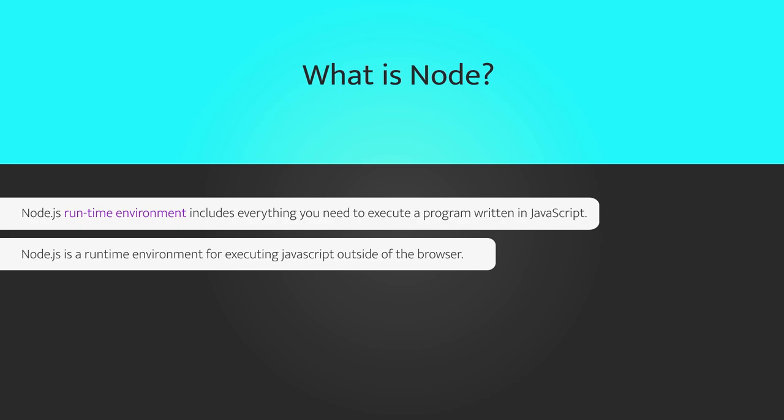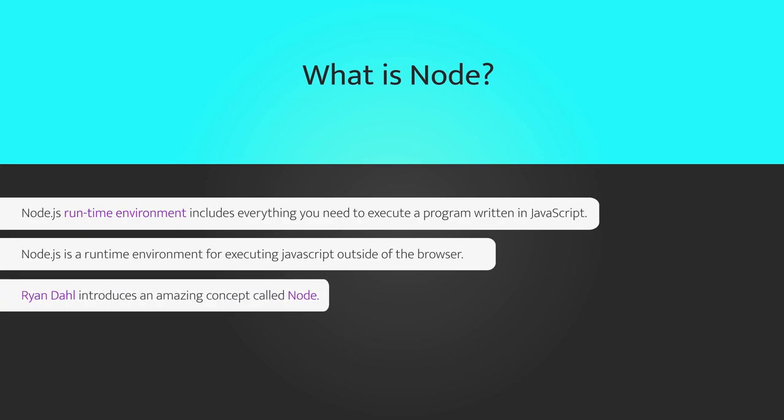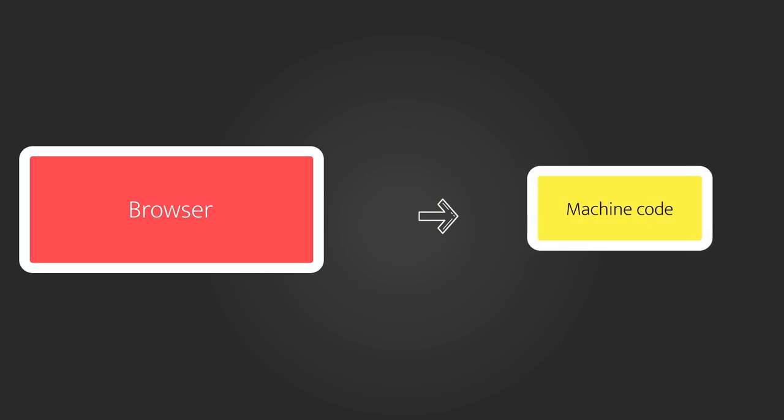Until 2009, JavaScript could only be executed in the browser. The inventor of Node, Ryan Dahl, introduced a new concept: executing JavaScript programs outside of the browser on any machine. Until Node was released, JavaScript could only be executed in the browser. Browsers convert JavaScript code into low-level machine code so the machine can understand it.